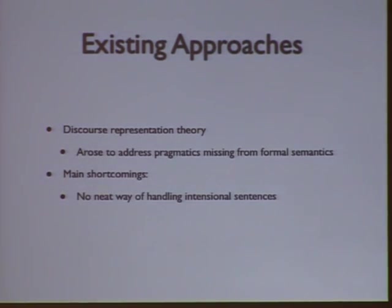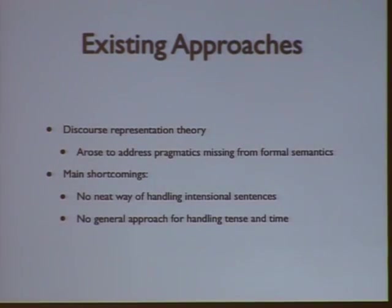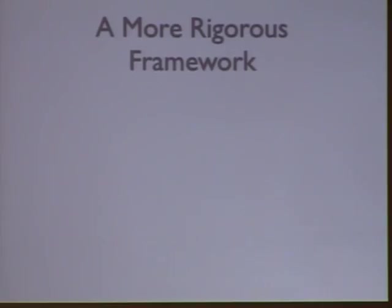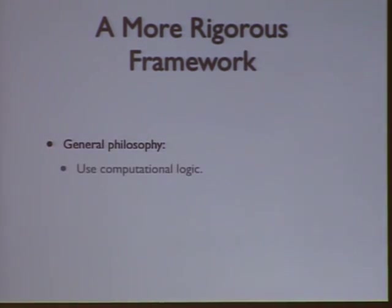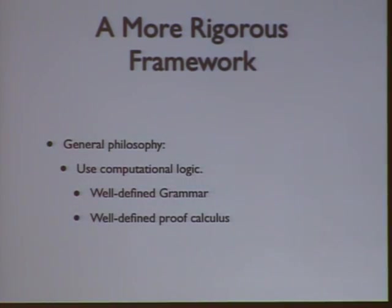But discourse representation theory, in the process of fixing those issues, kind of throws out some of the nice properties of formal languages. We lose a way of handling intensional sentences, and there doesn't appear to be a clear way to handle things like tense and time. So what we want to do is shift things back in the more formal direction — use a computational logic with a well-defined grammar and a well-defined proof calculus.